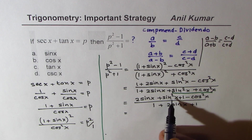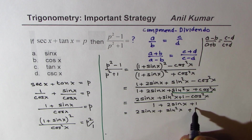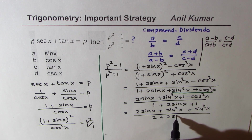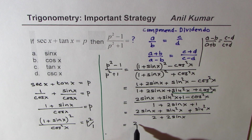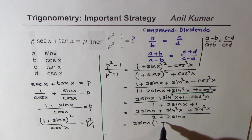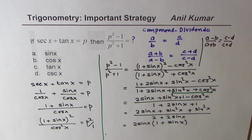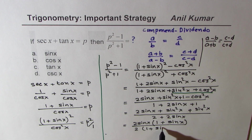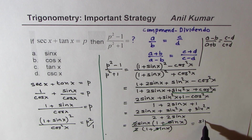Now, 1 minus cos squared x is sin squared x, so we get 2 sin x plus sin squared x plus sin squared x, which becomes 2 sin squared x. In the denominator we get 2 plus 2 sin x. We can take 2 sin x common in the numerator, getting 2 sin x times 1 plus sin x. In the denominator we take 2 common, getting 2 times 1 plus sin x.